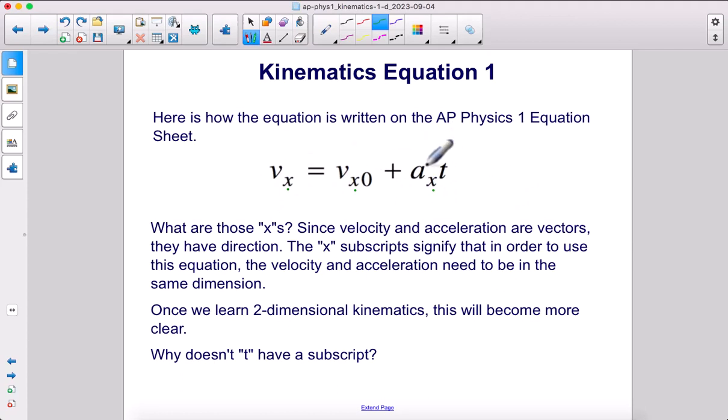Since velocity and acceleration are vectors, they have direction. The x subscripts signify that in order to use this equation, the velocity and acceleration plugged in need to be in the same dimension. Once we learn two-dimensional kinematics, this will become more clear.